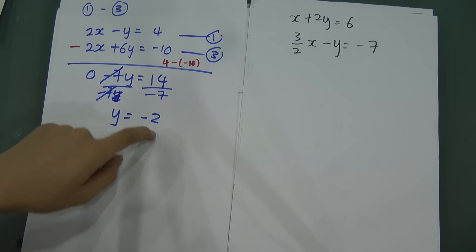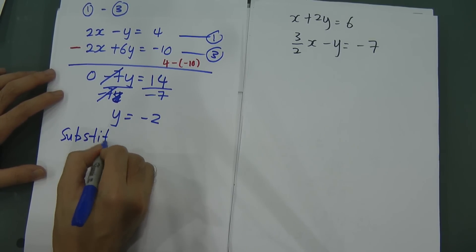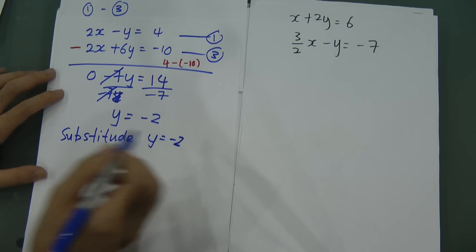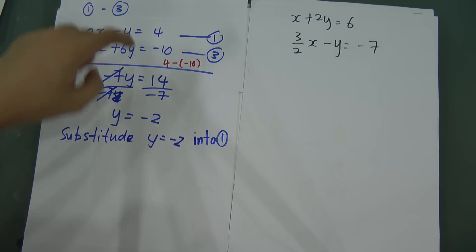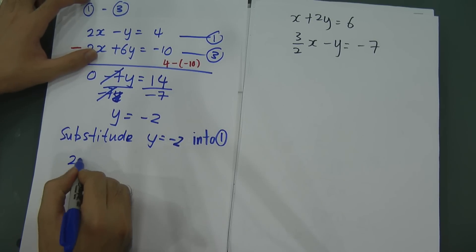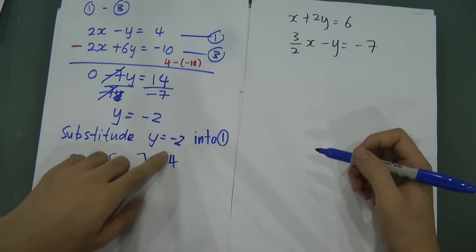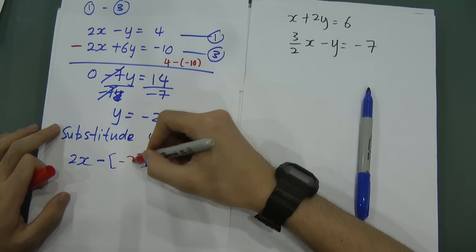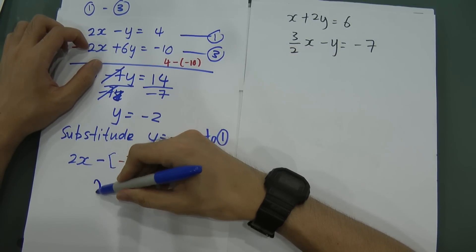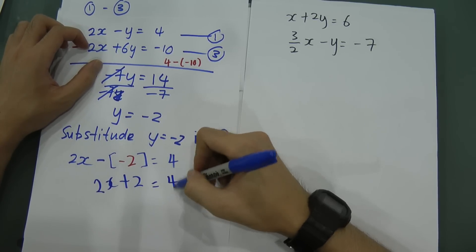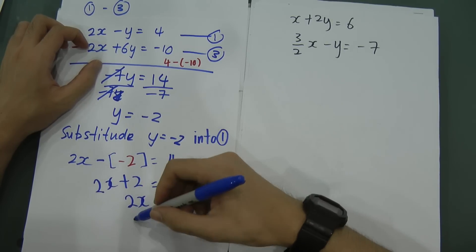Now I substitute y equal to negative 2 into the first equation: 2x minus y equal to 4. So y is now negative 2, giving 2x minus negative 2 equal to 4. Minus negative becomes positive, so 2x plus 2 equal to 4. Moving plus 2 to the other side gives 2x equal to 4 minus 2, which is 2. Therefore x equals 1.